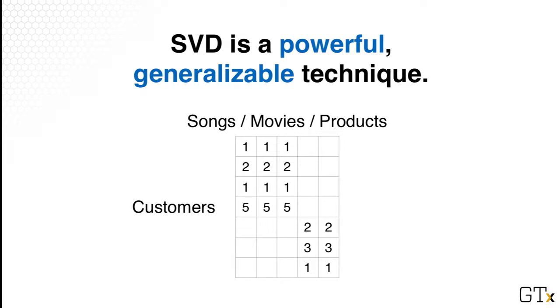So one thing to note is that I keep saying SVD is a very powerful and generalizable technique. The reason is that all it takes is a matrix of numbers. So it doesn't really care how you generate that matrix. For example, what we saw previously was each row is a customer and the columns would be like grocery store items. But there's nothing stopping you from using other matrices.